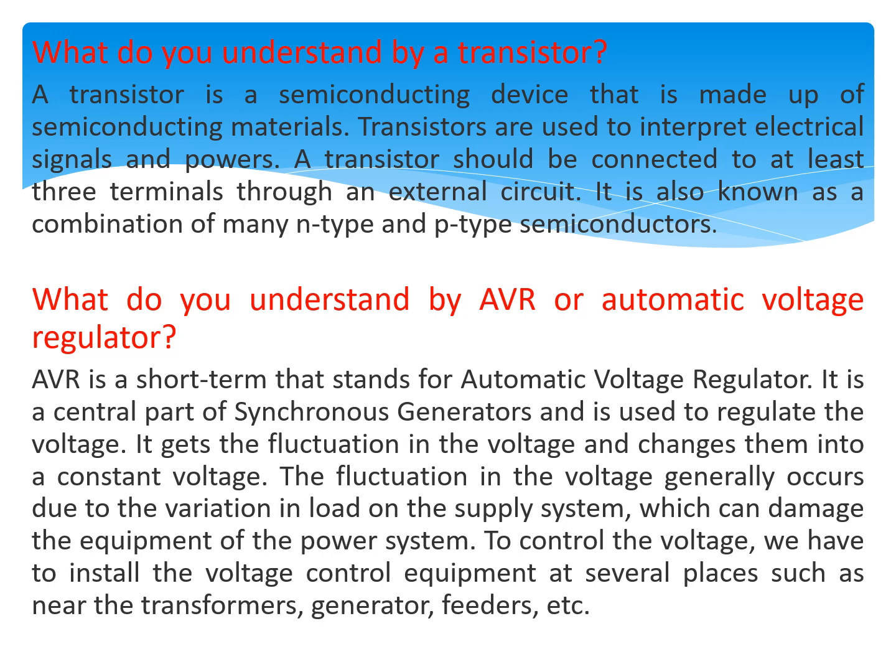What do you understand by AVR or Automatic Voltage Regulator? AVR stands for Automatic Voltage Regulator. It is a central part of synchronous generators and is used to regulate voltage. It takes voltage fluctuations and converts them into a constant voltage. These fluctuations generally occur due to variation in the load on the supply system, which can damage power system equipment. To control the voltage, voltage control equipment must be installed at several places such as near transformers, generators, and feeders.